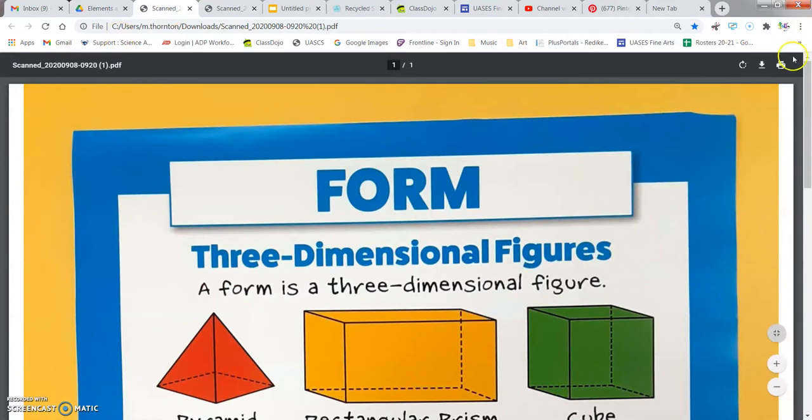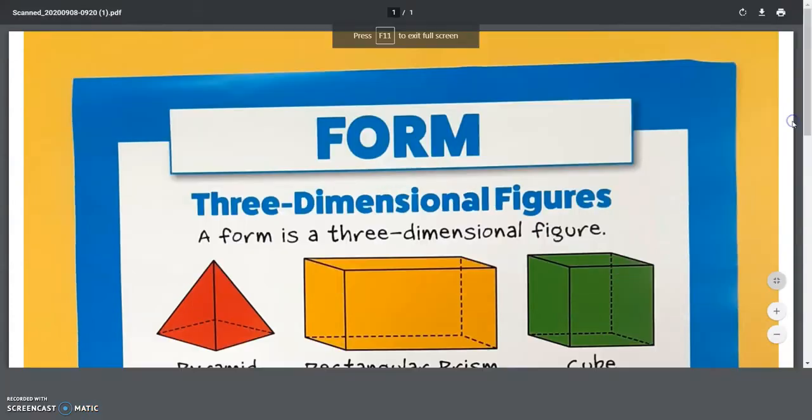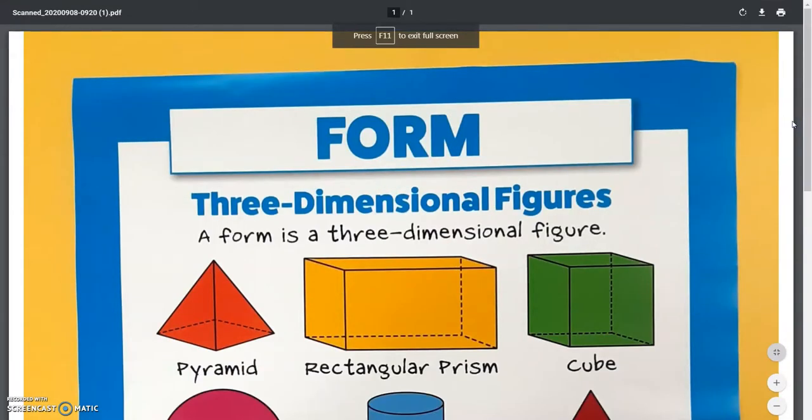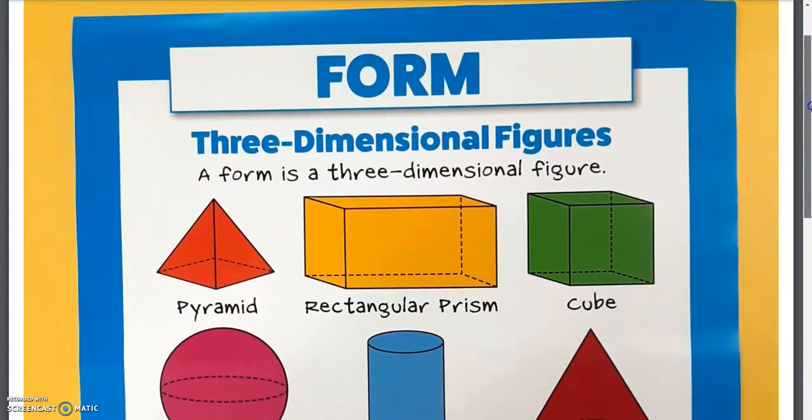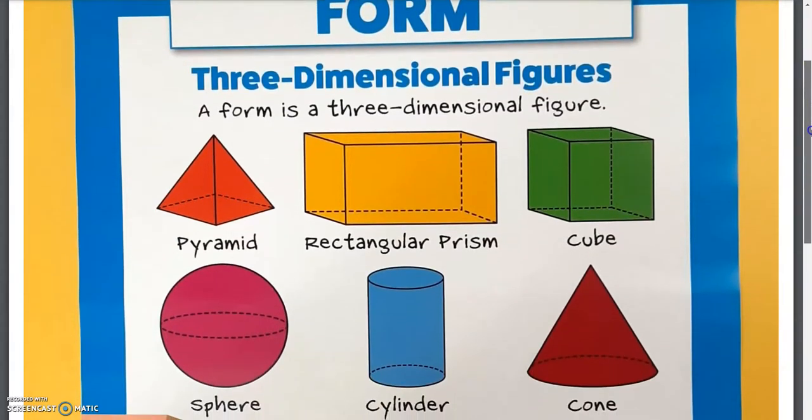Next, let's take a look at the element of art that we're going to be studying, which is form. Form, when you have form as an element in art, it is usually a three-dimensional figure, and we'll get into more about what that is as we scroll down.